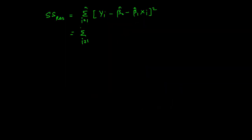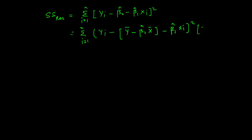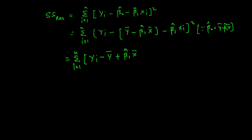I am now going to replace β̂₀ by Ȳ minus β̂₁X̄, since we know β̂₀ = Ȳ minus β̂₁X̄. The summation goes from i = 1 to n. It becomes Yi minus Ȳ, and because of the minus-minus giving plus, it becomes plus β̂₁X̄ minus β̂₁Xi, whole square.